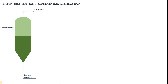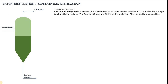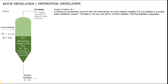Let's try solving now. Please read and try to understand the problem. The required values are the distillate composition, the amount of A, and the amount of B in the distillate.